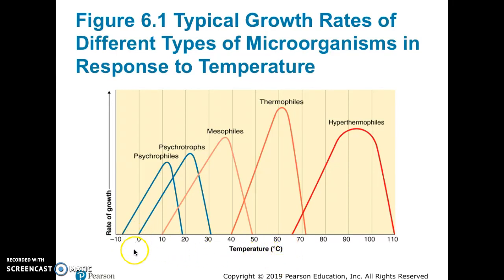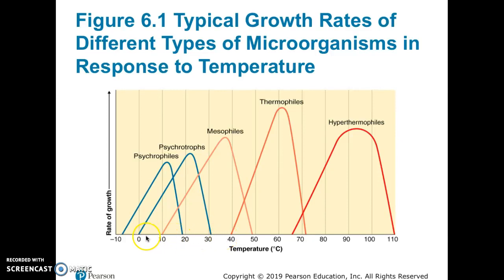These temperatures are shown on the Celsius scale, where zero is the freezing point of water and 100 is the boiling point. Average body temperature is about 37°C, which is also what our lab incubator is set at. A refrigerator would be around 4–5°C, just above freezing.